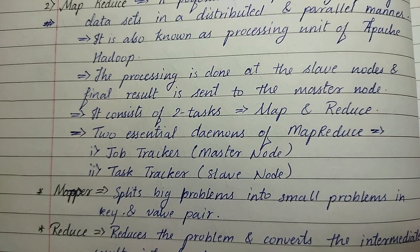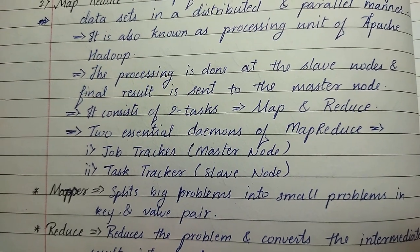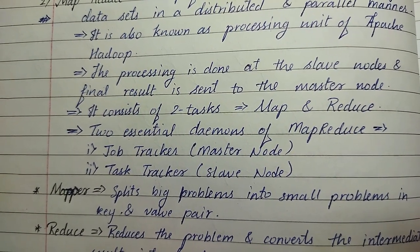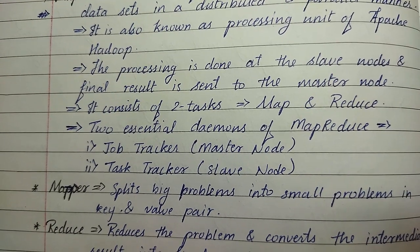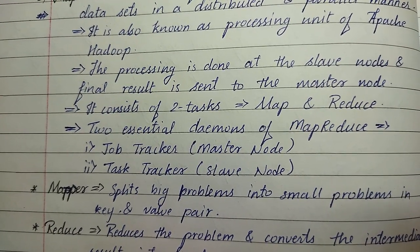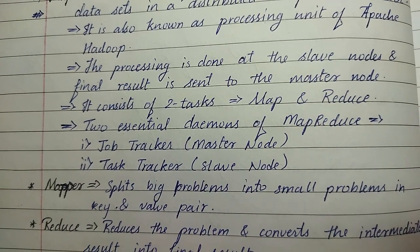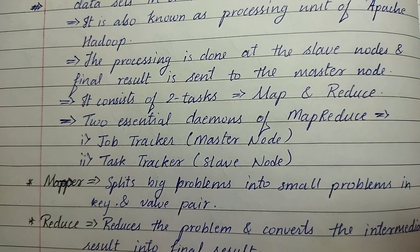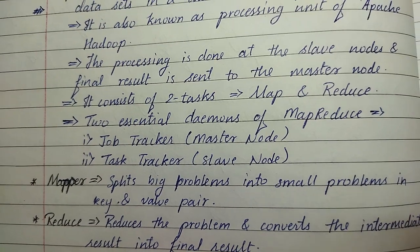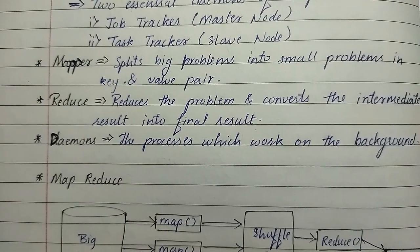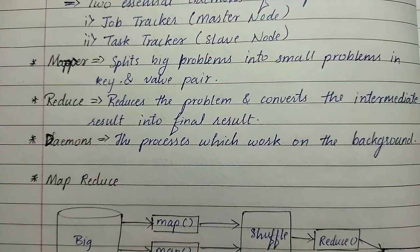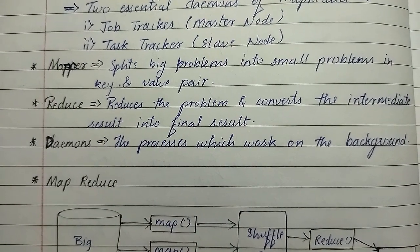There are two essential daemons of MapReduce. The first is job tracker, which can also be said as a master node, and the second is task tracker that acts as a slave node. The mapper splits big problems into small problems in key and value pairs, and the reducer reduces the problems and converts the intermediate results into the final result.